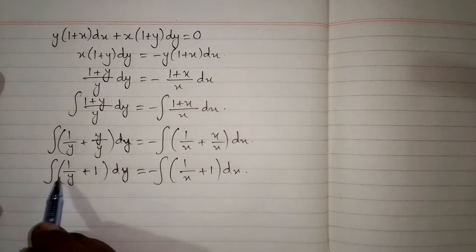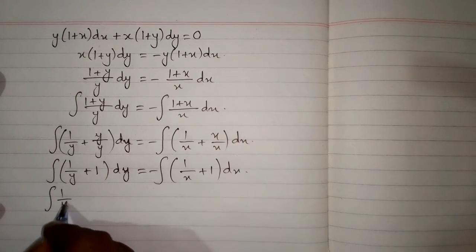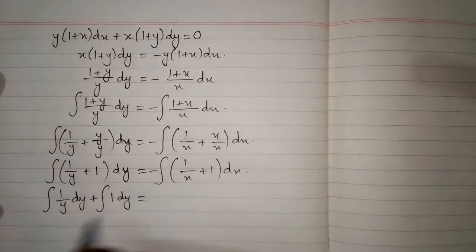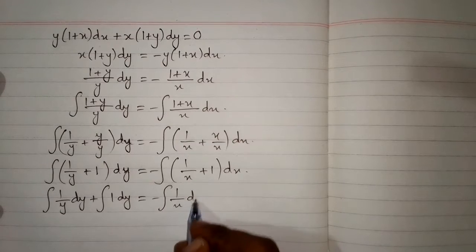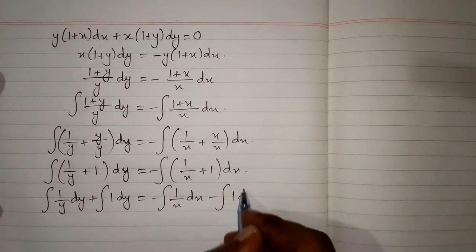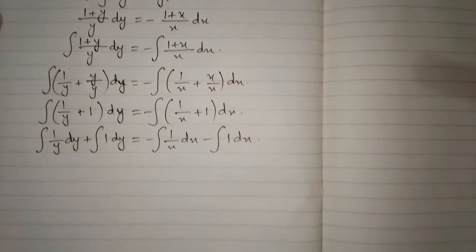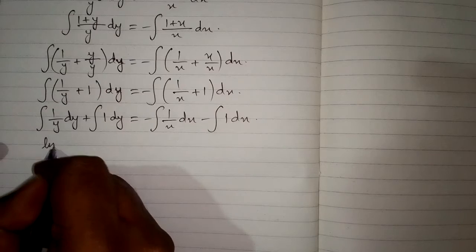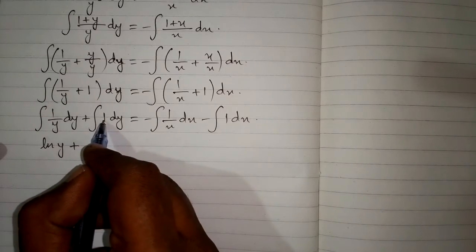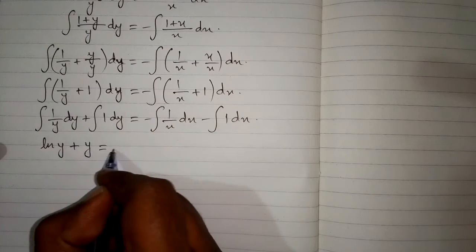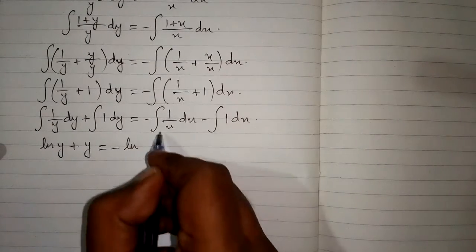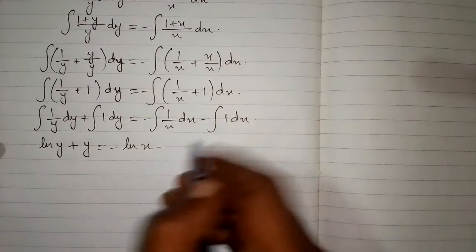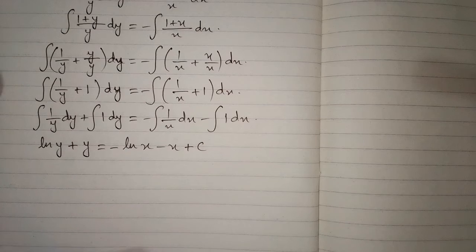Now we apply the integrals: the integral of 1 upon y dy plus the integral of 1 dy is equal to minus the integral of 1 upon x dx minus the integral of 1 dx, plus c, where c is the constant of integration.